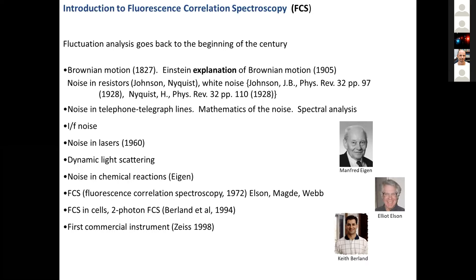It was really through the work of Elliot Elson in 1972 that the first FCS was done — FCS standing for Fluorescence Correlation Spectroscopy. Today we use F for Fluctuation Correlation Spectroscopy, because other signals beyond fluorescence can also be used. Elson wrote a famous paper in 1972, first author with Doug Magde and Watt Webb, published in a physics journal, in which he described the reaction of ethidium bromide with DNA — a chemical reaction — and studied the time it takes for ethidium bromide to bind and unbind. I also have a picture of one of my students, Keith Berlin, now a professor at Emory, who was one of the first to apply two-photon FCS in cells.